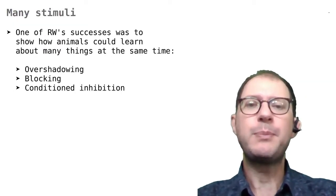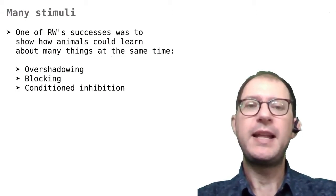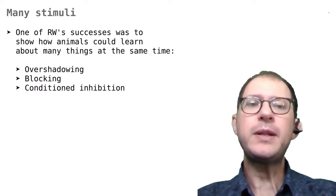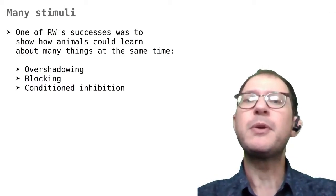For example, we could do a Pavlovian conditioning experiment where we turn on a light at the same time that we play a sound, and then give food to the animal. How can we understand learning in this experiment, or in any other experiment with more than one stimulus?